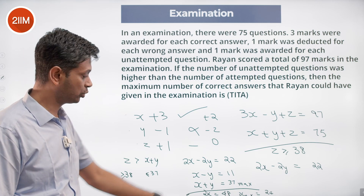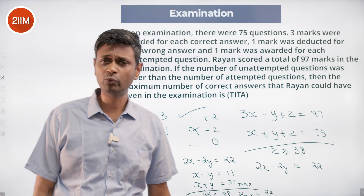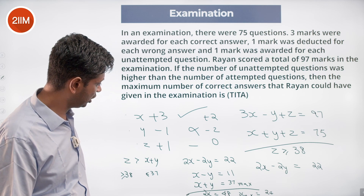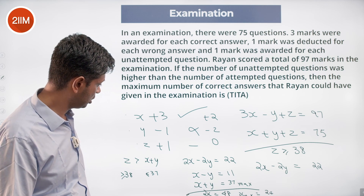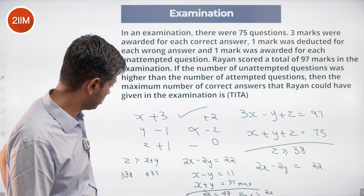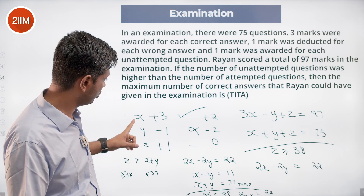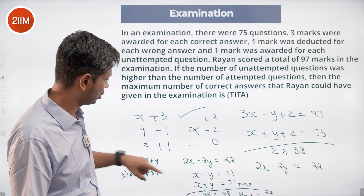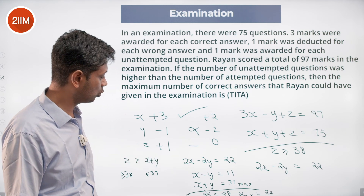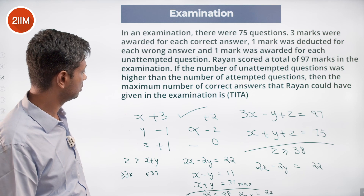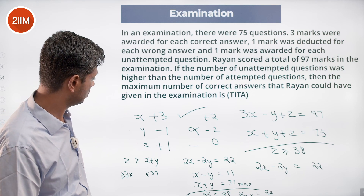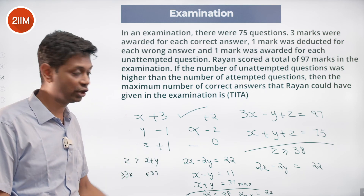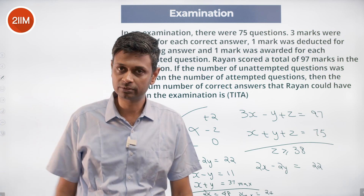Verification: 24 multiplied by 3 is 72, plus 13 multiplied by minus 1 is minus 13, plus 38 multiplied by plus 1 is 38. That gives 72 minus 13 plus 38, which equals 97. The answer checks out.